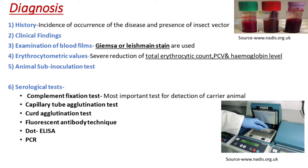Coming to diagnosis, history taking is most important, including incidence of occurrence of the disease and presence of insect vectors. Secondly, clinical findings. Thirdly, examination of blood films using Giemsa or Leishman stain. Fourth, erythrocytometric values — severe reduction of total erythrocytic count, packed cell volume, and hemoglobin levels are observed. Fifth, animal inoculation test, where blood from a suspected carrier is injected into healthy susceptible splenectomized animals. Sixth, serological tests such as complement fixation test — the most important test for detection of carrier animals — capillary tube agglutination test, card agglutination test, fluorescent antibody technique, ELISA, and PCR. Based on these serological tests, confirmative diagnosis is made.